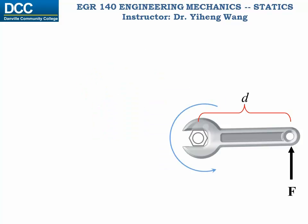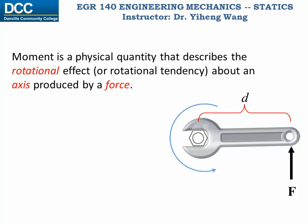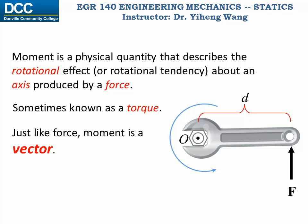Therefore, moment is defined in order to quantify this rotational effect caused by a force about a certain axis. In this example, the axis is perpendicular to the plane, and you can imagine it as an arrow shooting out from point O, and you can only see the head of the arrow represented by a dot. Sometimes a moment is also called a torque. And just like force, moment is also a vector, and therefore follows all vector calculation rules.